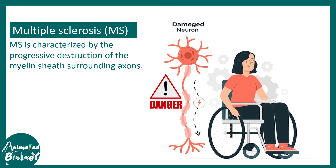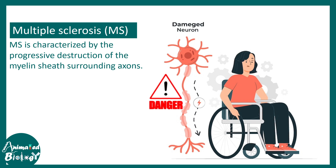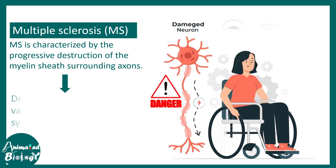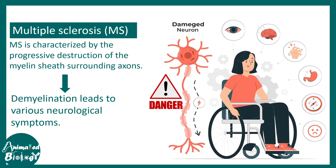Oligodendrocyte function can be disrupted in diseases like multiple sclerosis. Multiple sclerosis is characterized by progressive destruction of the myelin sheath surrounding the axons of the central nervous system. This destruction of the myelin sheath leads to different neurological symptoms which occur progressively.